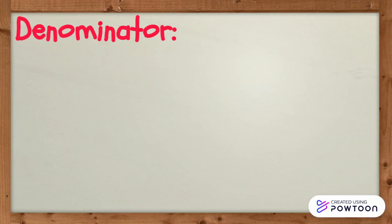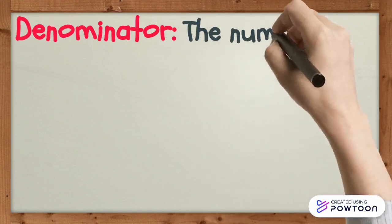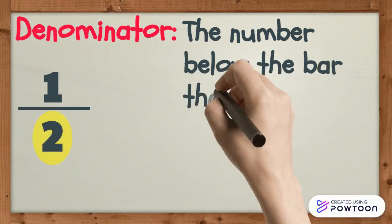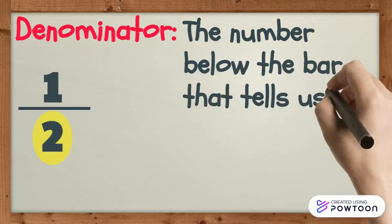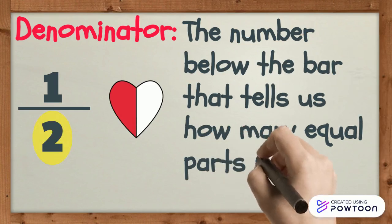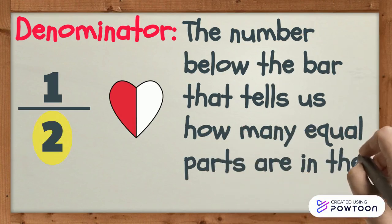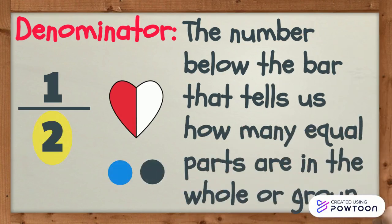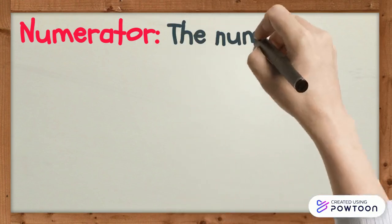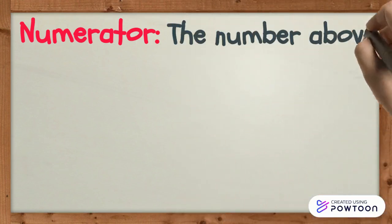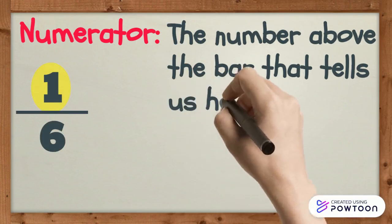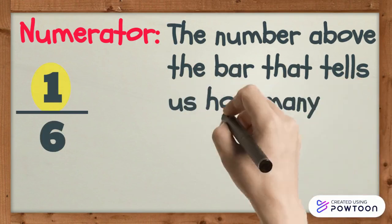Denominator is the number below the bar that tells us how many equal parts are in the whole or the group. Numerator is the number above the bar that tells us how many equal parts are being counted.